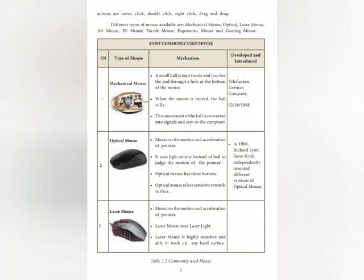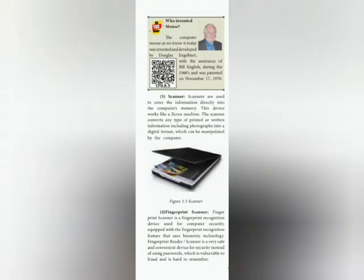Optical mouse. It was introduced in the year 1988. Richard Lyon and Steve Kirsch independently invented different versions of the optical mouse. Optical mouse has 3 buttons and is less sensitive towards the surface. Laser mouse measures the motion and acceleration of the pointer. Laser mouse uses laser light and is highly sensitive, able to work on any surface.